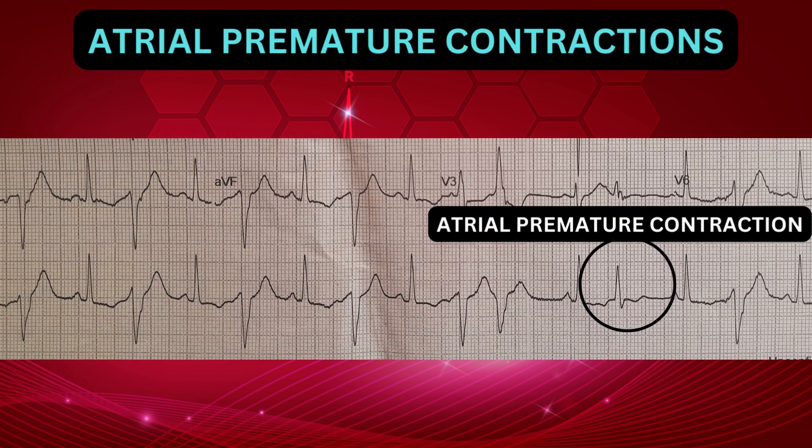Let us now briefly discuss atrial premature contractions or APCs. They are initiated by atrial myocardium but do not originate from the SA node. They are characterized by a premature P wave and a QRS complex which appears similar to the underlying QRS complex morphology. They are followed by a compensatory pause. Most premature atrial contractions are relatively harmless, but if they occur frequently, they can increase the risk of both cardiac and all-cause mortality.